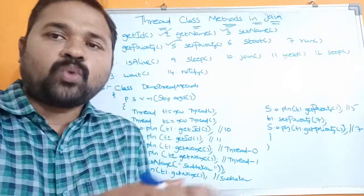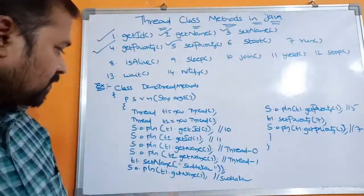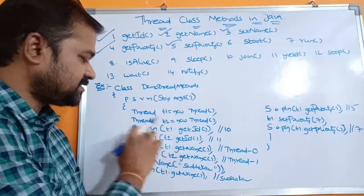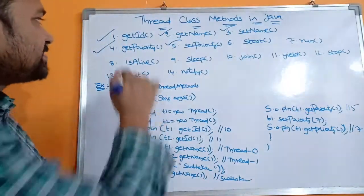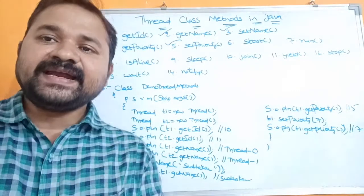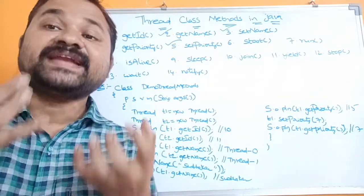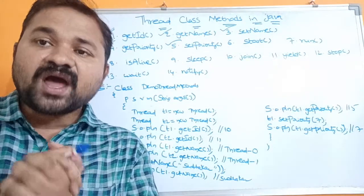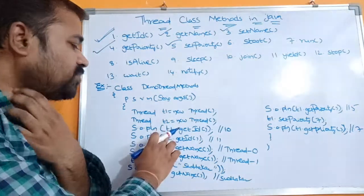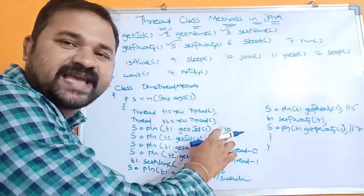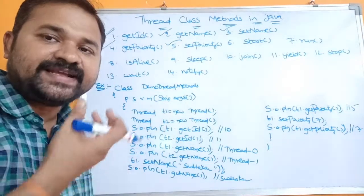So first: System.out.println(t1.getId()). Let's see what is the use of getId. getId returns an identification number for the thread — every thread has an identification number. So System.out.println(t1.getId()) returns an integer value. Let us assume it returns a value called 10, so 10 is the output here.